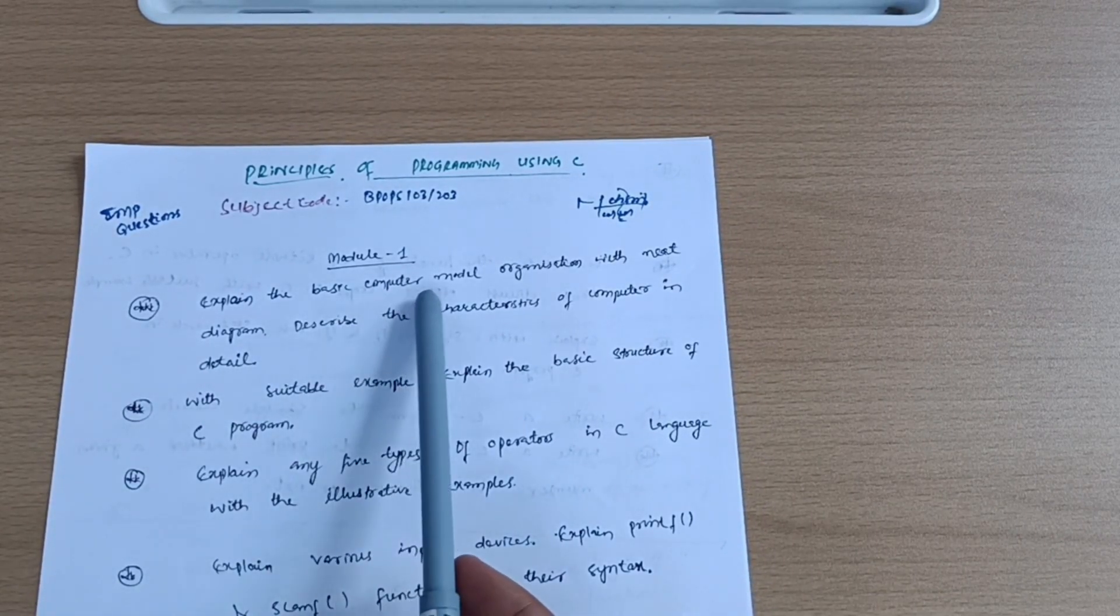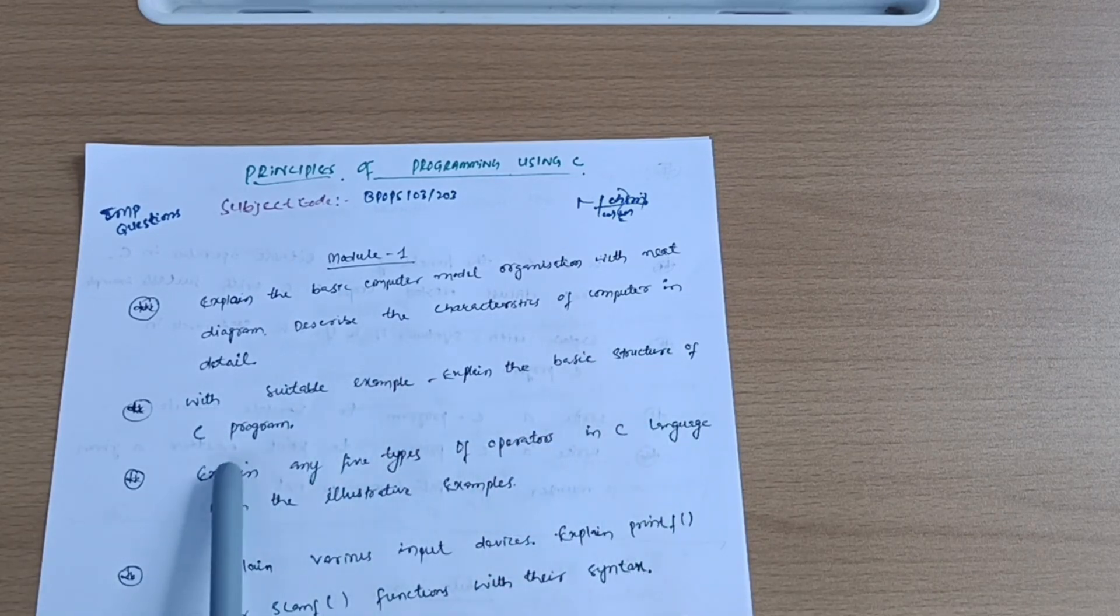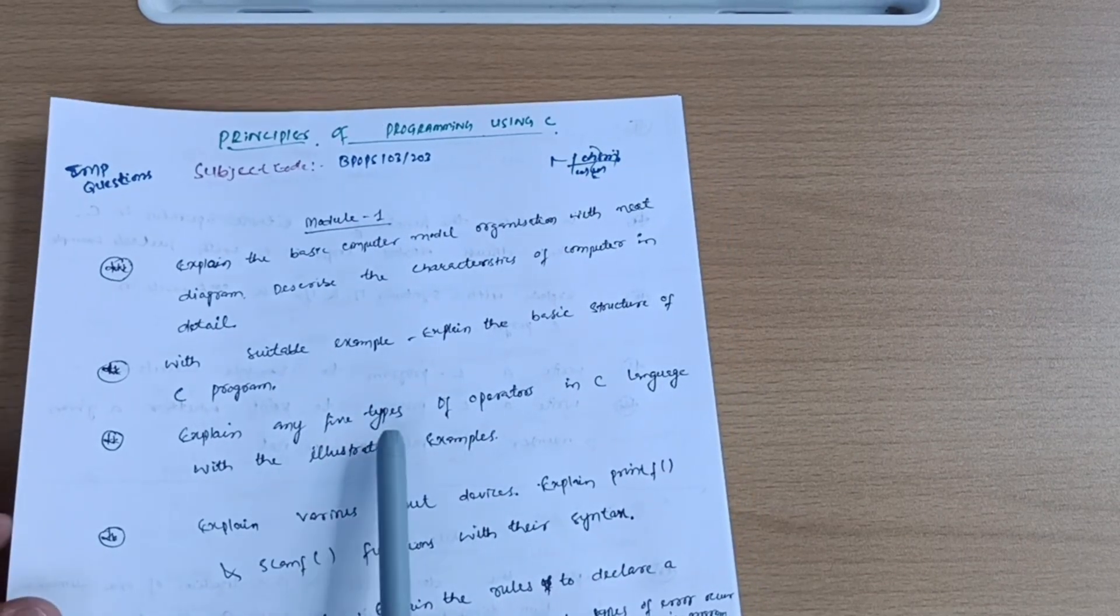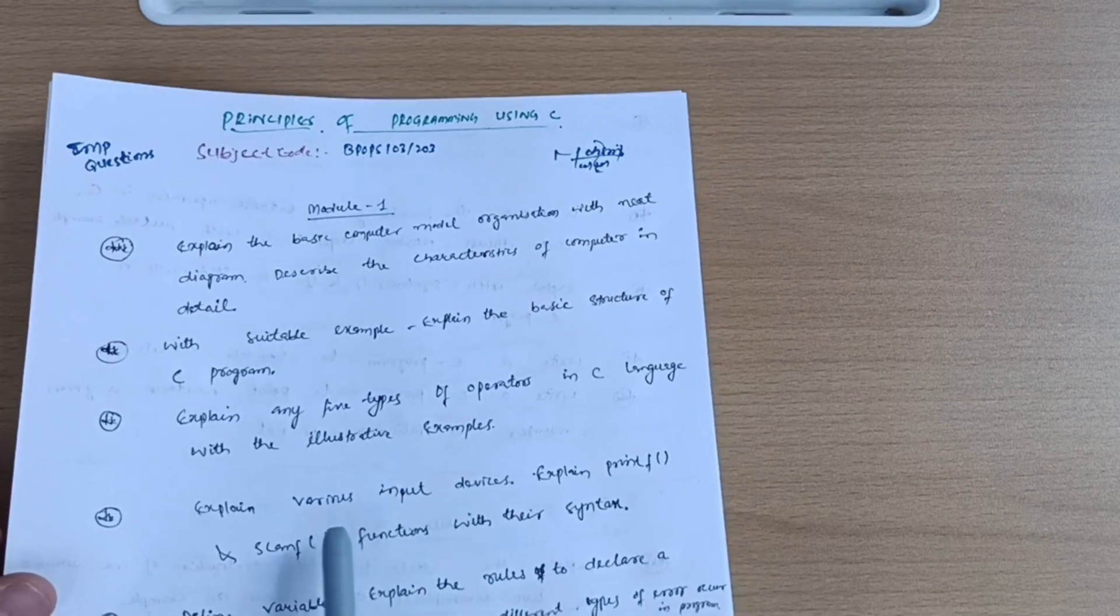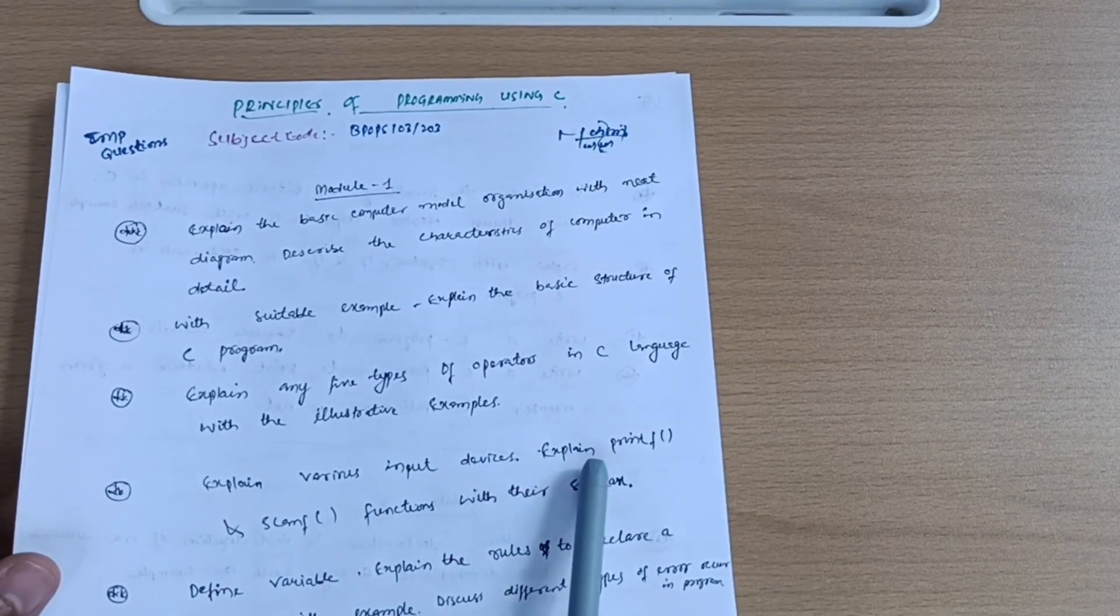In first module you have to cover: explain the basic computer model organization with neat diagram, describe the characteristics of computer in detail with suitable example, explain the basic structure of C program - it is a super important question - and explain any five types of operators in C language with illustrative examples.